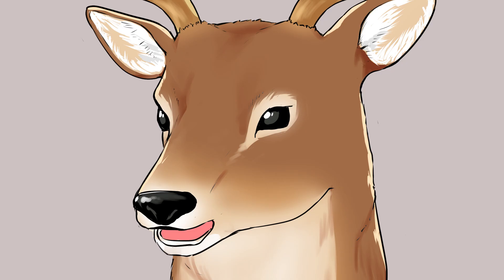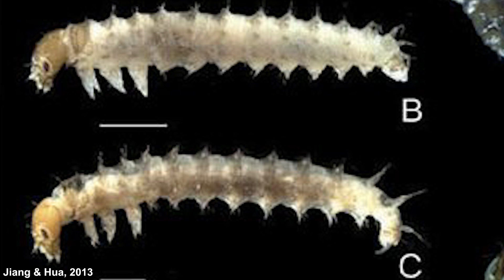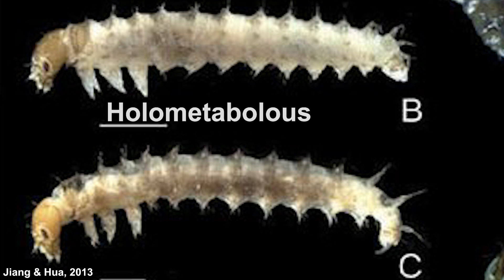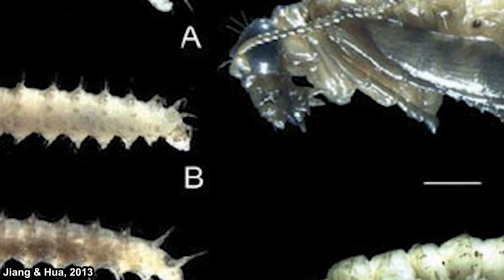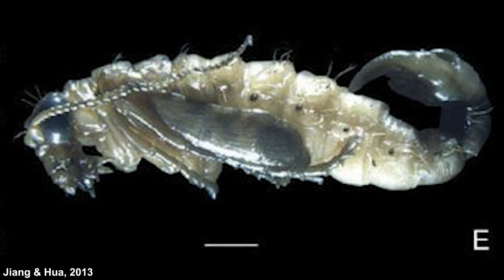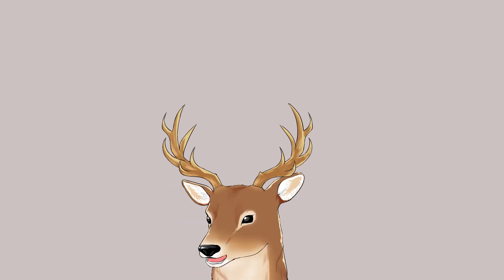Their larvae are caterpillar-like with hooks or suction discs on their posterior. Notably, their larvae have compound eyes, which is unique among holometabolous insects — that is, insects with complete metamorphosis stages. Their pupae are not enclosed within a cocoon, so they have free appendages, also known as exarate pupae.